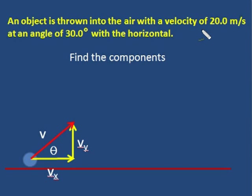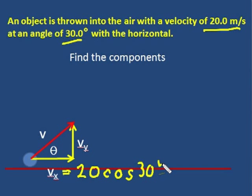Now this is pretty easy. We've done this many times. 20 meters per second, 30 degrees. Vx is equal to V, which is 20, times the cosine of theta, cosine of 30. And I work that through my calculator. And I find 17.3 meters per second.